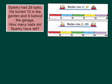Let's have a look at another one. Sparky had 28 balls. He buried 10 in the garden and six behind the garage. How many balls did Sparky have left? First of all, let's look at the key words that tell us it is actually subtraction we're using.